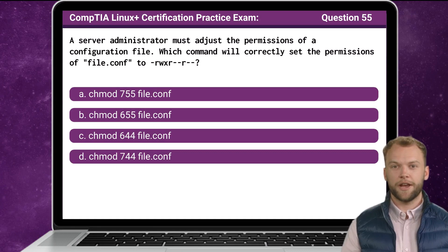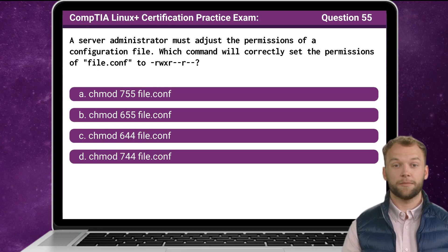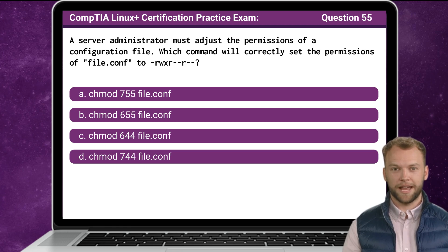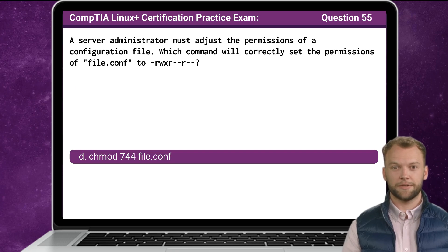Question 55. A server administrator must adjust the permissions of a configuration file. Which command will correctly set the permissions of file.conf to -rwxr--r--? The answer is D: chmod 744 file.conf.